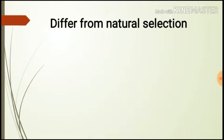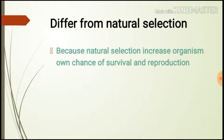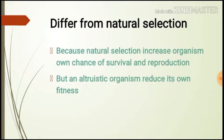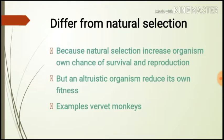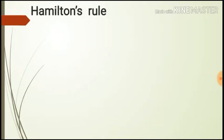So how is altruism different from natural selection? Natural selection leads us to expect animals to behave in ways that increase their own chances of survival and reproduction, not those of others. But by behaving altruistically, an animal reduces its own fitness. As in the vervet monkey example, they give alarm calls to warn fellow monkeys about the presence of predators, increasing their personal chances of being attacked. So we should expect natural selection to favor those monkeys that do not give alarm calls over those that do.